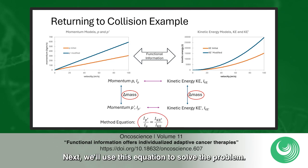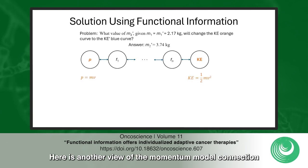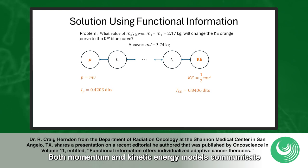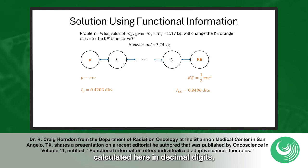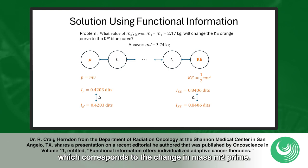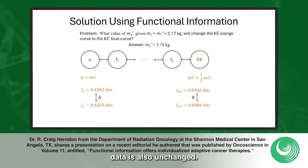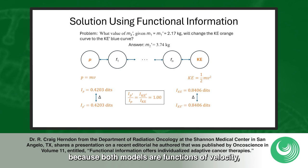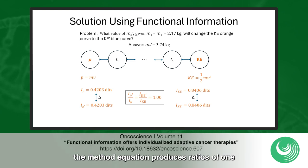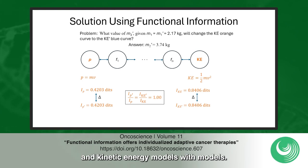Next, we'll use this equation to solve the problem. The functional information methodology will now be used to produce the answer derived from the traditional method. Here is another view of the momentum model connection through a mathematical chain of functions to the kinetic energy model. Both momentum and kinetic energy models communicate in the units of information, calculated here in decimal digits referred to as DITs. Functional information is calculated for the Ke' curve, which corresponds to the change in mass M2'. Note that the functional information for the Ke' data is the same as the initial Ke data, and the functional information for the P' data is also unchanged. This occurs because both models are functions of velocity, where the mass parameters provide scale to the outputs. Since scaling factors do not carry any functional information, the method equation produces ratios of 1.